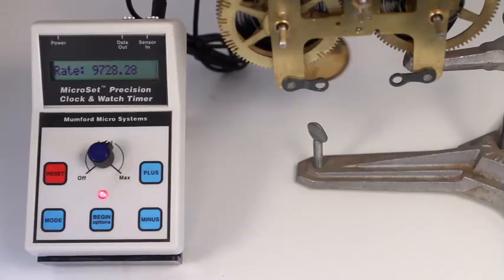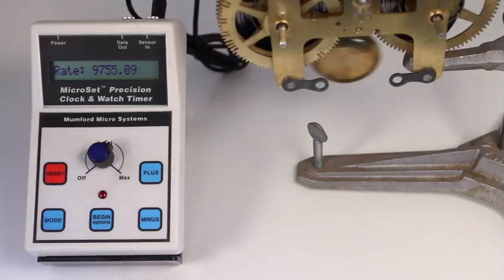The blanking window greatly reduces these sources of error. It's built into every microset timer and can't be turned off, but you can change the size of the window for different situations.